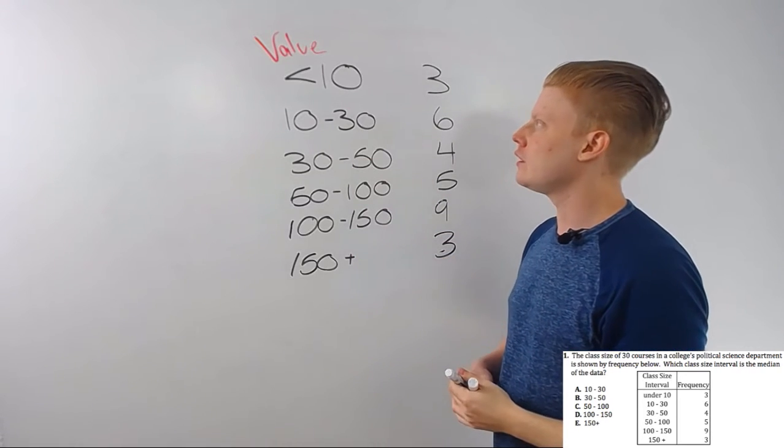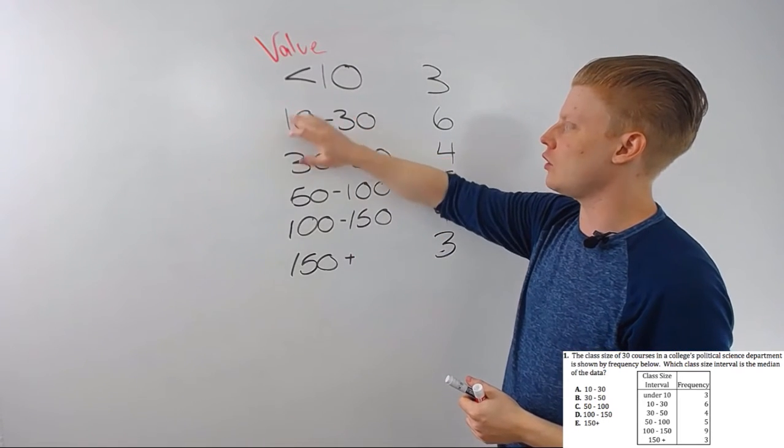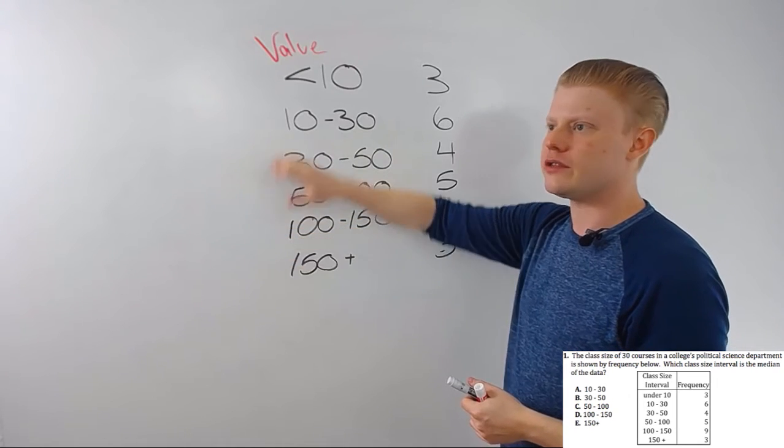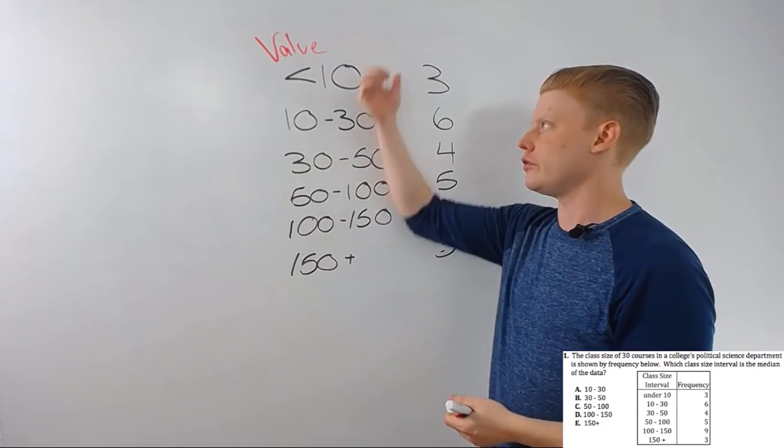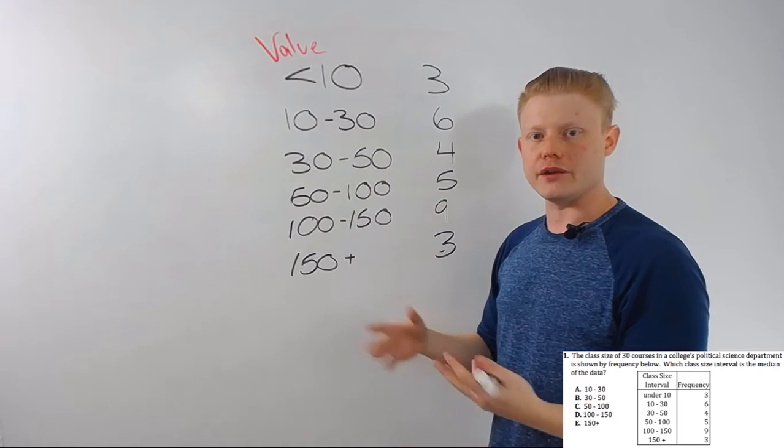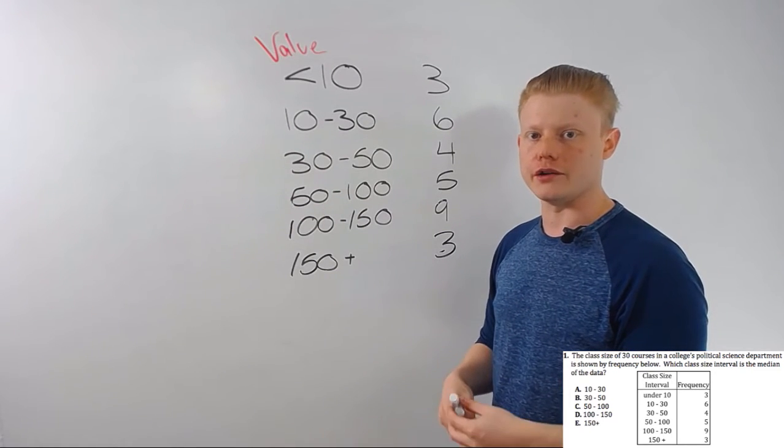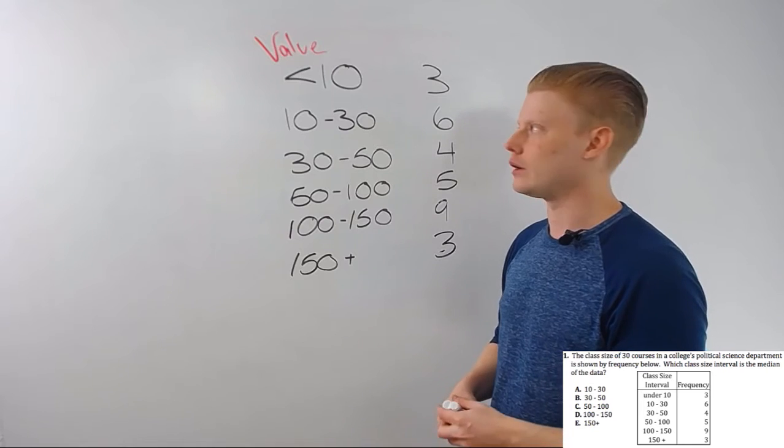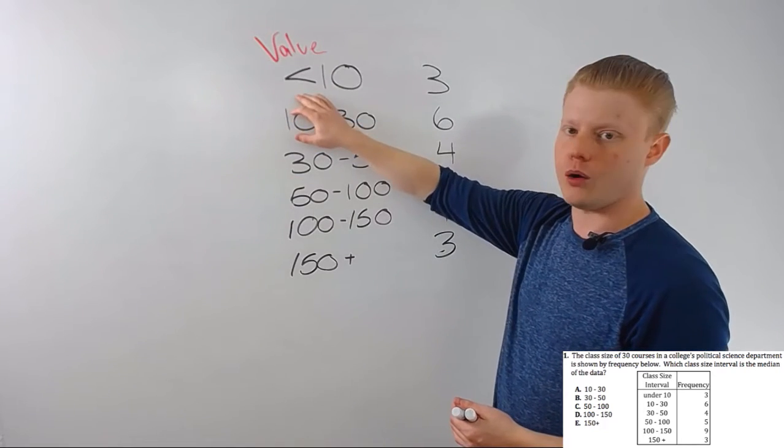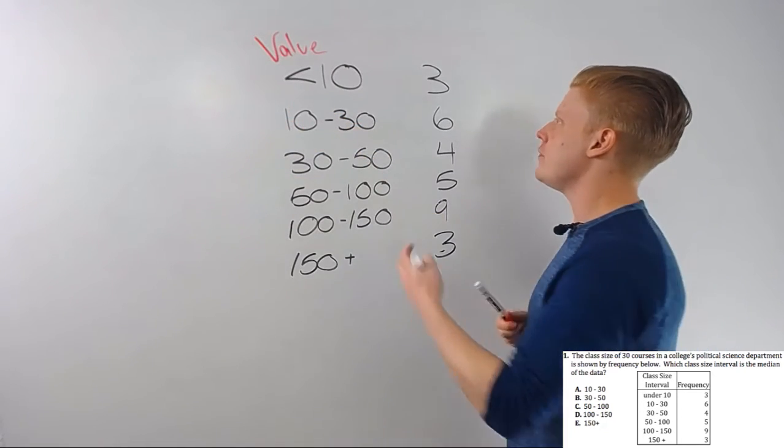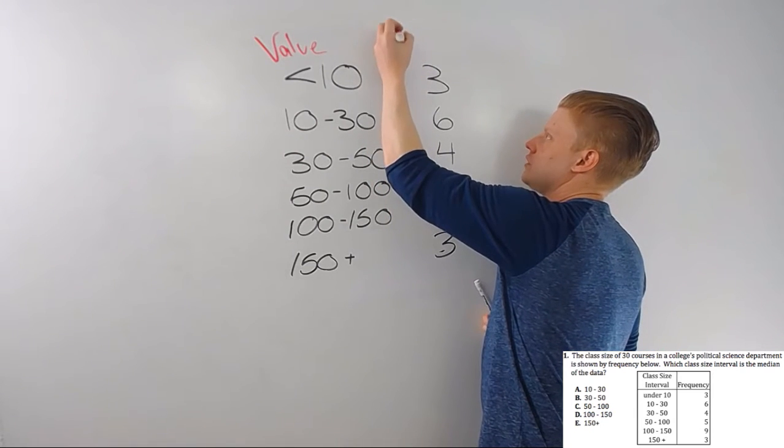Now this is the value column, and essentially these are the categories that we're sorting the numbers into. At least here they're somewhat arbitrary - I could say like under 8 or under 12 or something - but this is how we're sorting things.